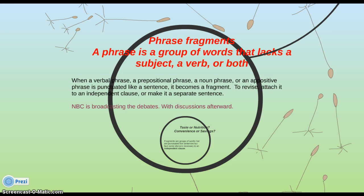To revise a phrase fragment, attach it to an independent clause or make it into a separate sentence. Look at the example: 'NBC is broadcasting the debate. With discussions afterward.' We have here a prepositional phrase — 'with discussions afterward' — that's a fragment by itself. Easy to fix: change the period after 'debate' to a comma, and you end up with 'NBC is broadcasting the debate with discussions afterward.' Now we have a sentence, not a fragment.